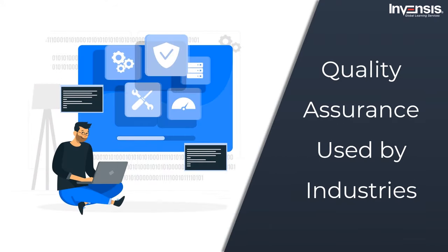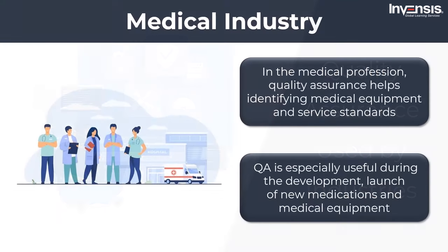Now let us move on to our next topic and talk about quality assurance used by industries. First is the medical industry. In the medical profession, quality assurance is critical since it helps identify medical equipment and service standards. Hospitals and laboratories use external agencies to guarantee that equipment such as x-ray machines, diagnostic radiology, and ERB meet certain criteria. QA is especially useful during the development and launch of new medications and medical equipment. Through its members and regulatory organizations, the Research Quality Association supports and promotes the quality of research in the life sciences.